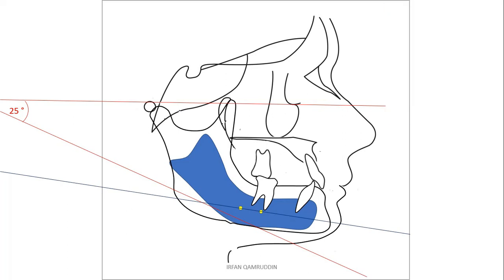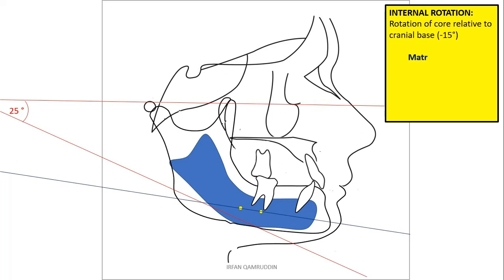We call it internal rotation, that is rotation of the core relative to the cranial base. Normally it is minus 15 degrees. Here negative sign denotes that the direction of the rotation is anti-clockwise. If the sign is positive, plus, then it denotes that the direction of the rotation is clockwise.